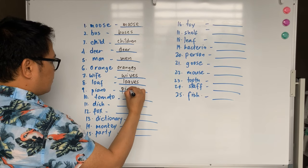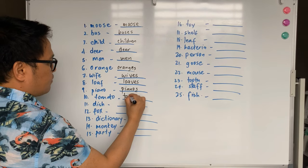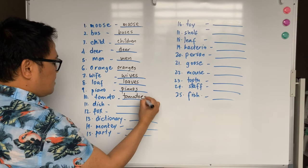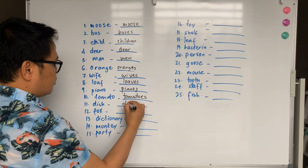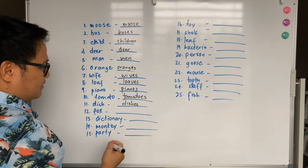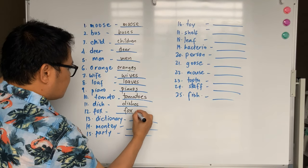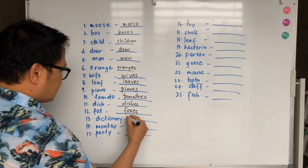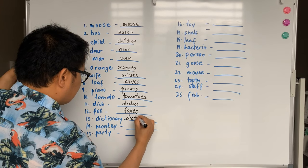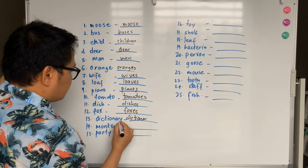Piano just add S. Tomato you add ES. Dish add ES becomes dishes. Fox add ES again becomes foxes. Dictionary, change Y to I and then add ES.